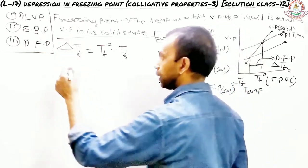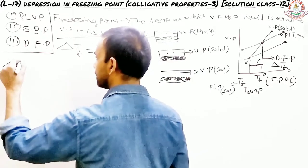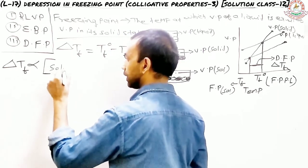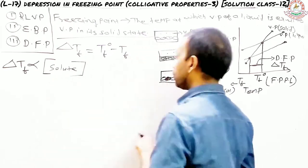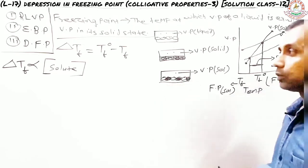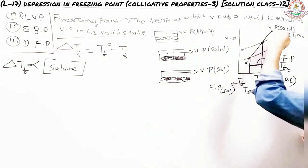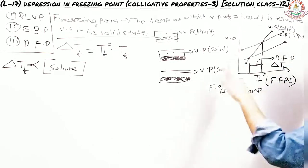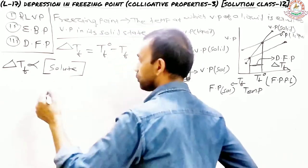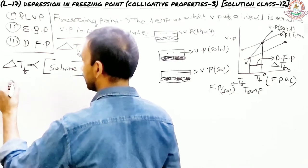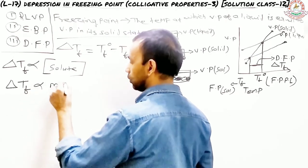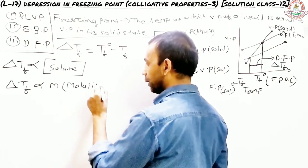The second condition says that ΔTf is directly proportional to the concentration of the solute. This depression in freezing point is due to the addition of the solute — once you add the solute, the vapor pressure further decreases. So the change in freezing point is directly proportional to the concentration of the solute. More specifically, ΔTf is directly proportional to the molality of the solution. Why molality? I have explained that already.